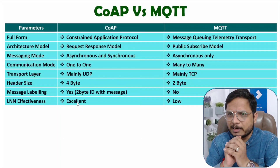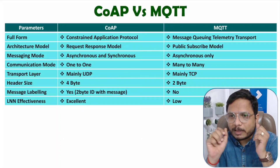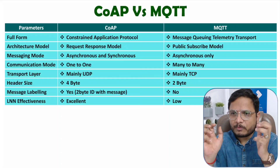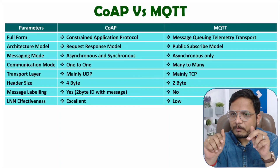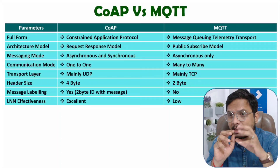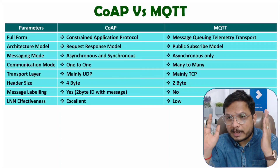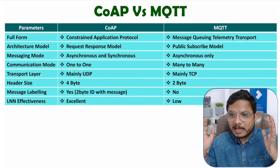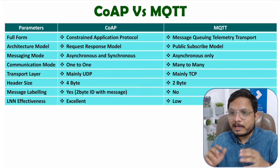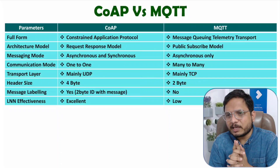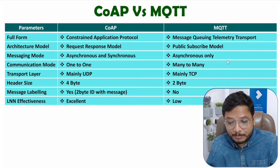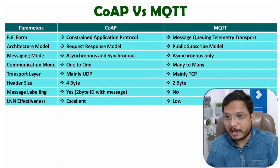In CoAP, 1-to-1 communication happens, so with a low-power lossy network, communication is easily possible. But with MQTT, a broker is present between Publishers and Subscribers, and many-to-many communication happens. So as the network degrades, performance becomes very weak. Therefore, effectiveness is less with MQTT in the case of LNN.